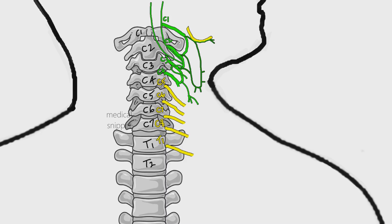The roots are formed by the ventral rami of C5 to C8 nerves and ventral ramus of first thoracic nerve. Sometimes C5 root may receive fibers from C4 — this is called prefix type. And when T1 root receives fibers from T2 root, then it is called postfix type.